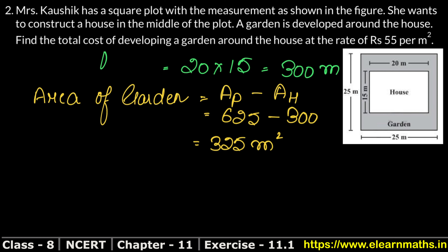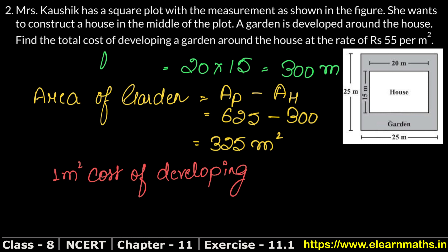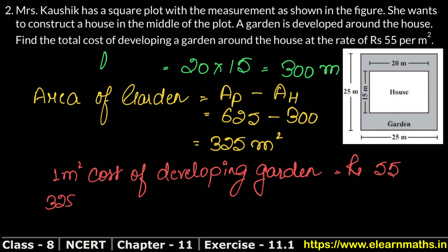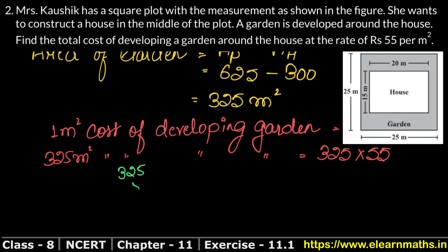Now we have the cost of developing 1 square meter of garden, which is 55 rupees. To find the cost for 325 square meters, we multiply 325 by 55.